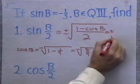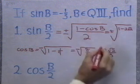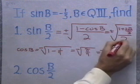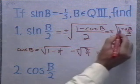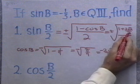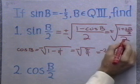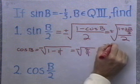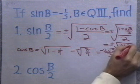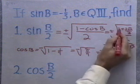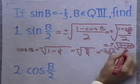So I have plus or minus the square root of 1 minus negative 2 square root 2 over 3, all divided by 2. That gives me 3 over 3 plus 2 square root 2 over 3. So I have 3 plus 2 square root 2, all over 3, divided again by 2. That's going to give me plus or minus the square root of 3 plus 2 square root 2, all over 6.